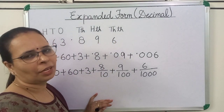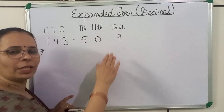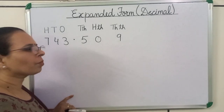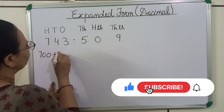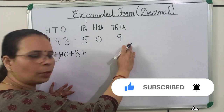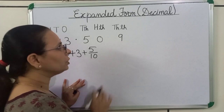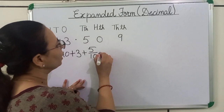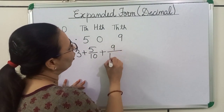Now we will expand this number using both the methods. I am using the fractional method first. We will expand the whole number: 700 plus 40 plus 3. Now we will expand the decimal part. 5 is at the 10th place, so we will write 5 upon 10. 0 is at the 100th place, so we will skip it. Next number is 9 — 9 is at the 1000th place, so we will write 9 upon 1000.